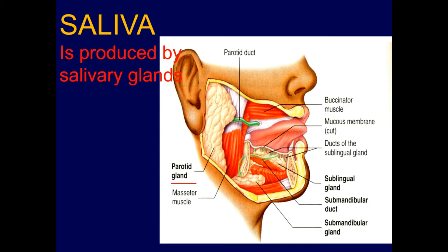They secrete saliva which is watery in nature, containing more than 90 percent water. The parotid glands secrete more than 25 percent of the total salivary secretion. The ducts of the parotid gland open on the inner side of the right and left cheek and pour their secretions into the vestibule.